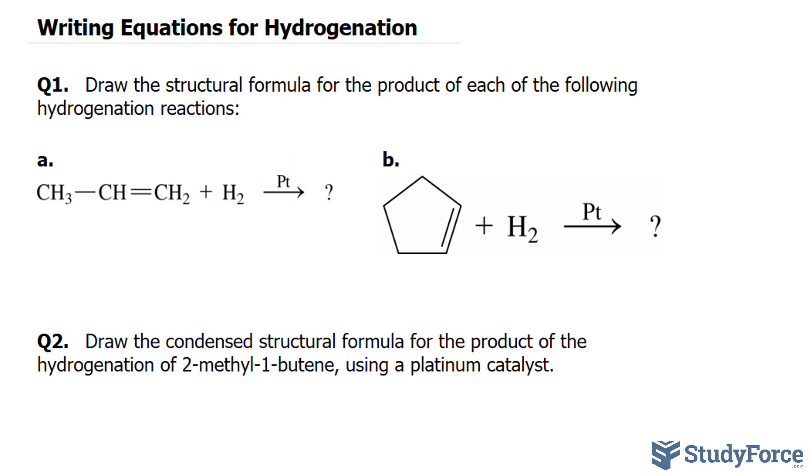In the real world, we see this a lot. This reaction is applied in the hydrogenation of vegetable oils, which naturally contain long chains of unsaturated carbons. After the process, the carbons in these oils become saturated with hydrogen and become known as hydrogenated oils.